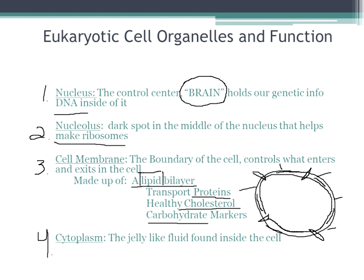The cytoplasm is the jelly-like fluid inside the cell. So nucleus is number one, nucleolus is number two, cell membrane is out here for number three, and cytoplasm is just the space inside the cell — number four. Good point, Joshua. Transport proteins help things move through the cell membrane with or without energy. They definitely help with movement. That's why they're embedded inside the cell membrane as little transport proteins.